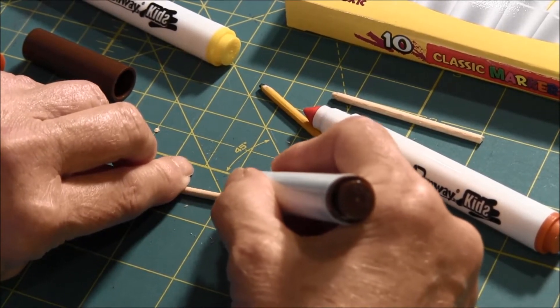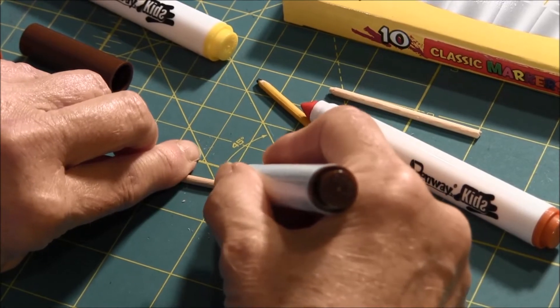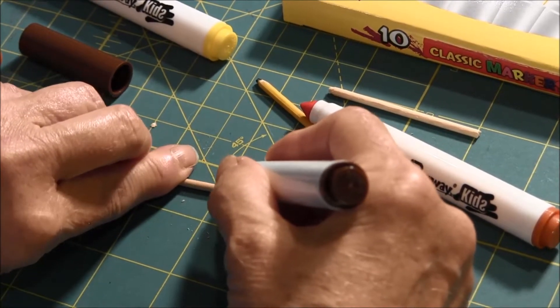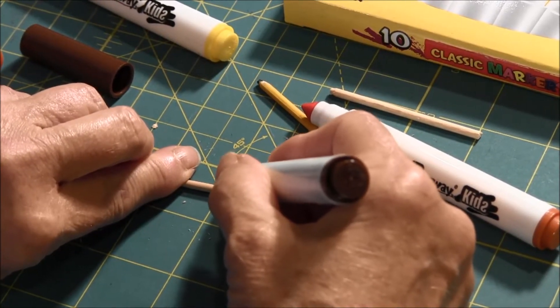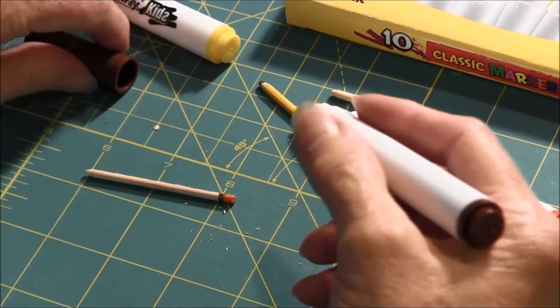And now I'm doing where the little metal part is, I'm using a brown marker. If you have a metallic or a gold one that would be fine too.